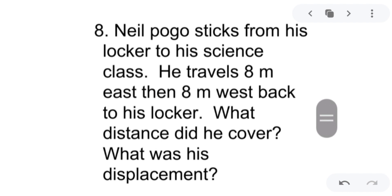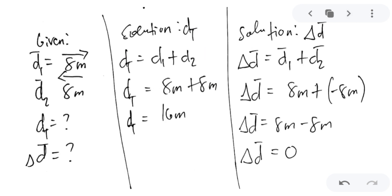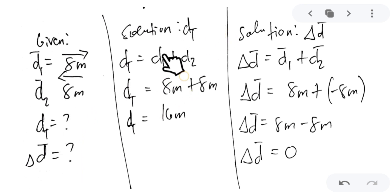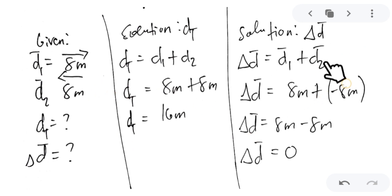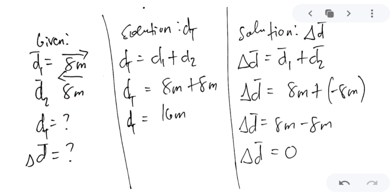Next problem: Neil pogo sticks from his locker to his science class, traveling 8 meters east and 8 meters west back to his locker. What distance did he cover and what was his displacement? For total distance: 8 meters plus 8 meters equals 16 meters. For displacement (parallel): east is positive so +8 m, west is negative so −8 m. 8 meters minus 8 meters equals 0. He returned to his original position, so the displacement is 0.